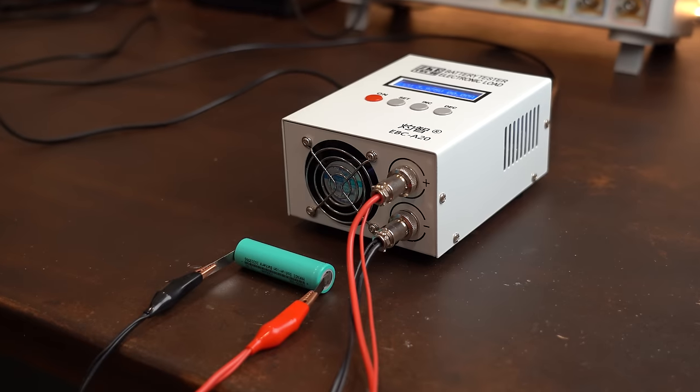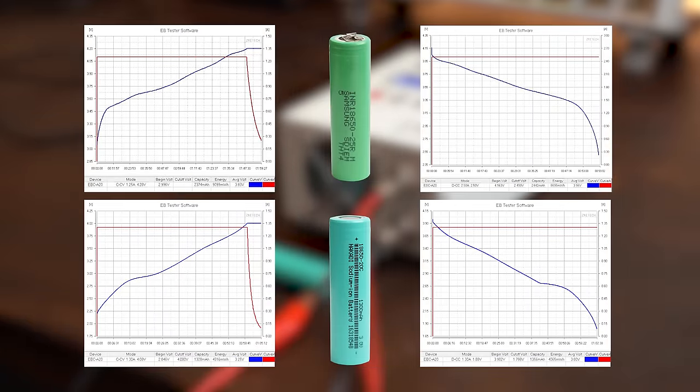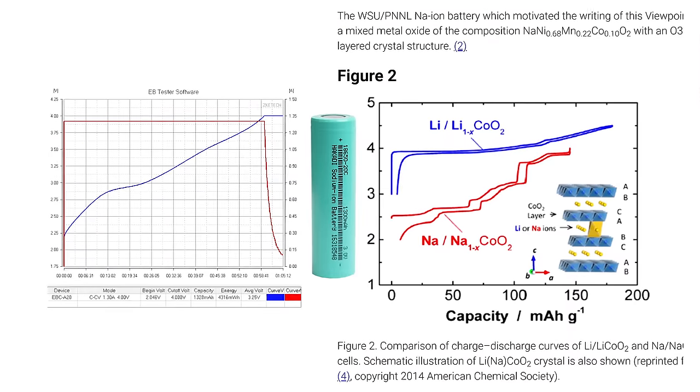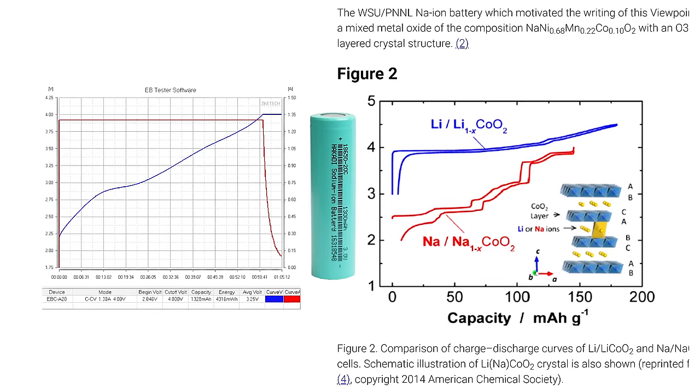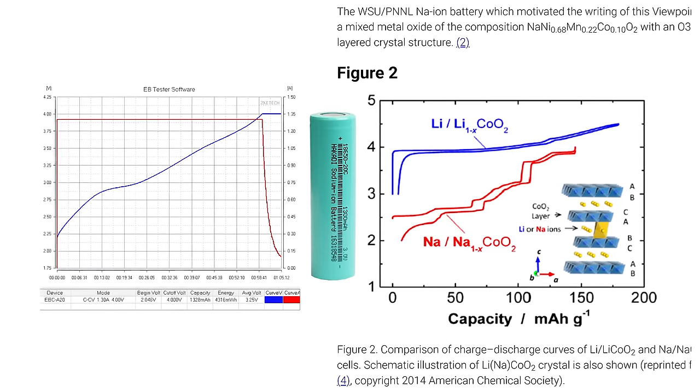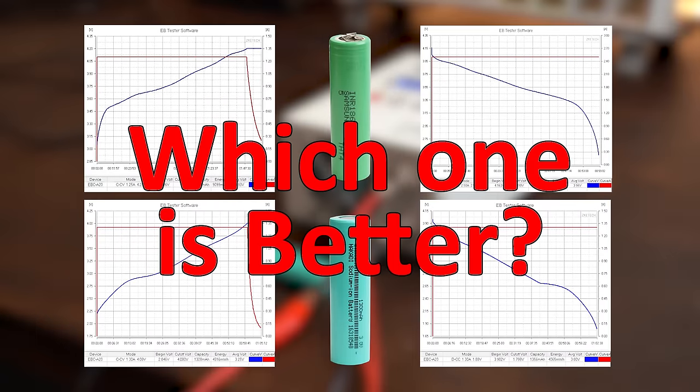And after once again waiting for a few hours I was greeted with these curves here which without a doubt look quite a bit different than the lithium ion ones and do correspond with sodium ion curves you can find in scientific reports, which is enough proof for me. But which curve is now better you might ask?